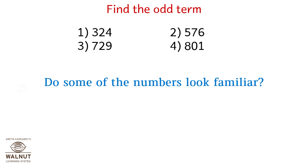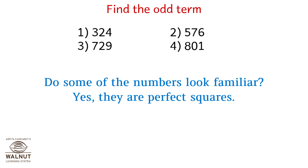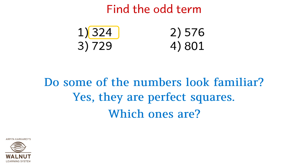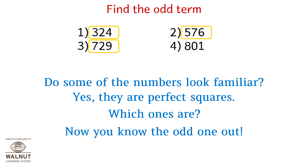Do some of the numbers look familiar? Yes, they are perfect squares. Which ones are? 324, 729, and 576 are perfect squares. Now you know the odd one out — it's option 4: 801.